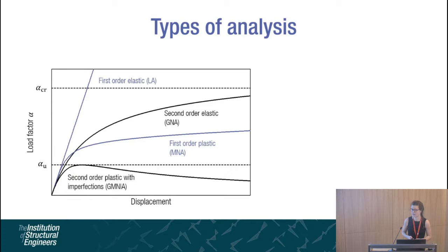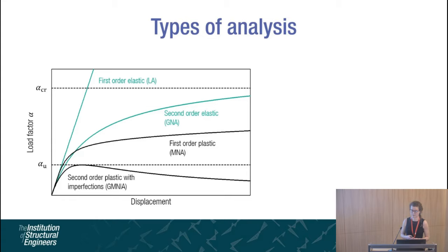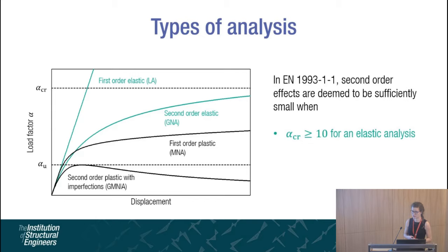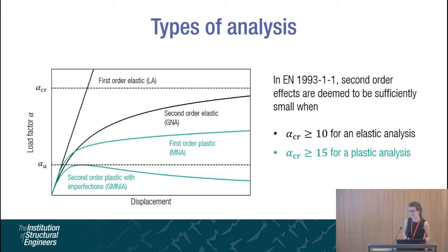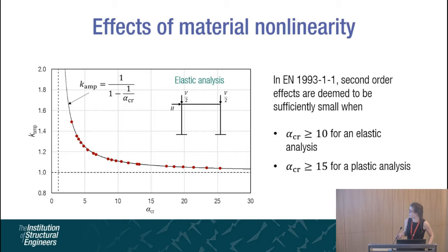This figure shows load-displacement paths from a number of different analyses and highlights the significance of both material non-linearity and geometric non-linearity, also known as second-order effects. Second-order effects must be included in analysis when they significantly modify the structural behaviour, and this assessment is made based on the critical load factor — the factor by which the applied loading would need to be increased to cause elastic instability of the frame in a global sway mode. The Eurocode gives limits when second-order effects may be deemed sufficiently small: the critical load factor must be greater than or equal to 10 for an elastic analysis and greater than or equal to 15 for a plastic analysis. These limits have been developed on the assumption of a linear elastic or linear elastic perfectly plastic material model and therefore should be assessed for application to structural stainless steel design.